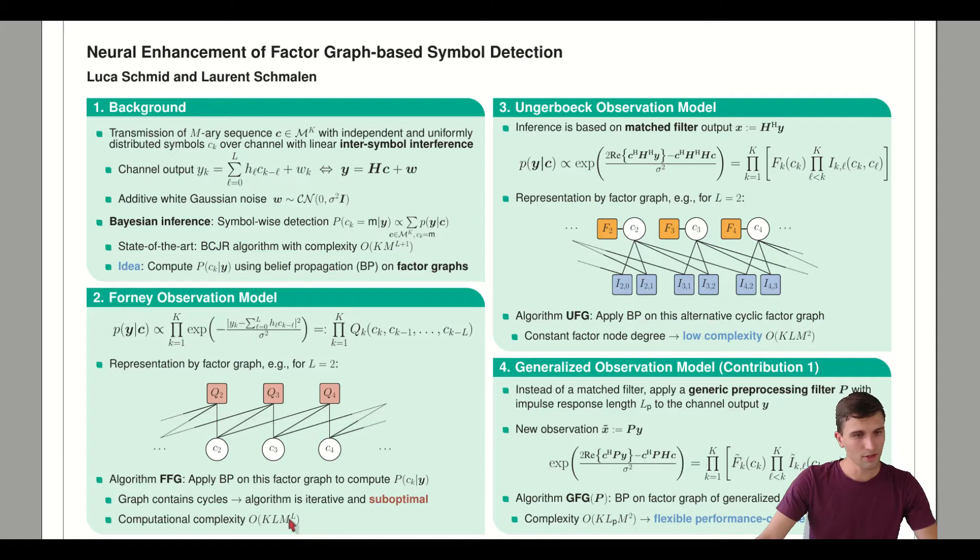To reduce the complexity we need an alternative factor graph. The Ungerberg observation model is given if we first apply a matched filter to the channel output. H adjuncted is applied to the channel output Y, and we base our inference on this output of the matched filter X.